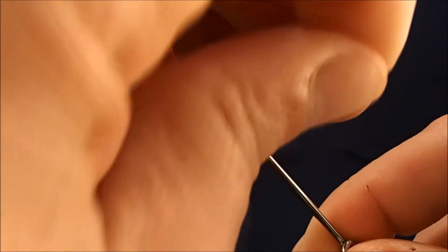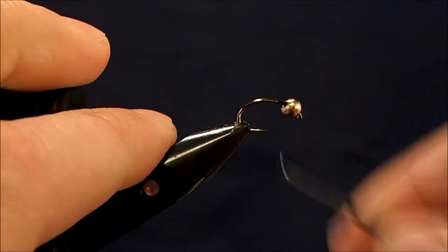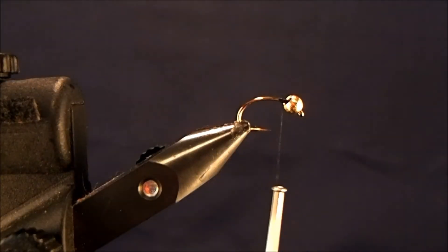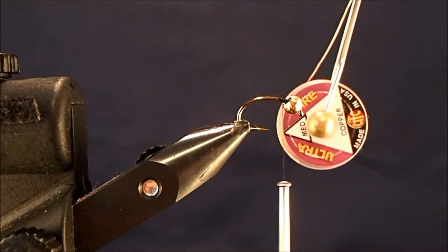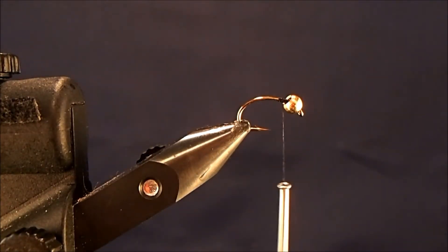I'll get a couple of wraps started behind the bead head and break that off. For the body of this fly, I'm going to use medium copper wire.